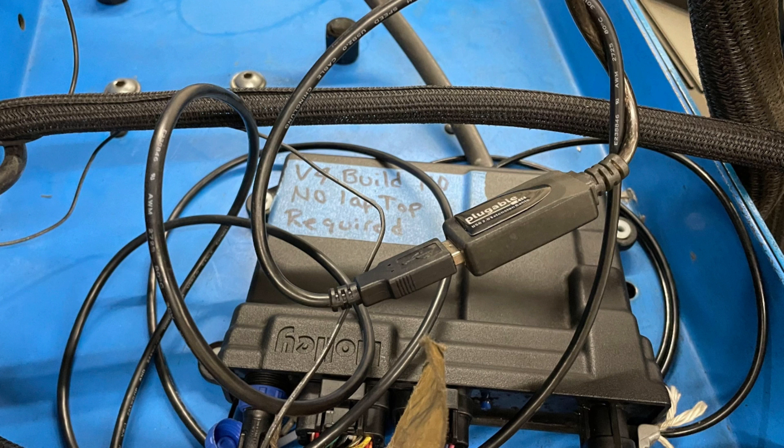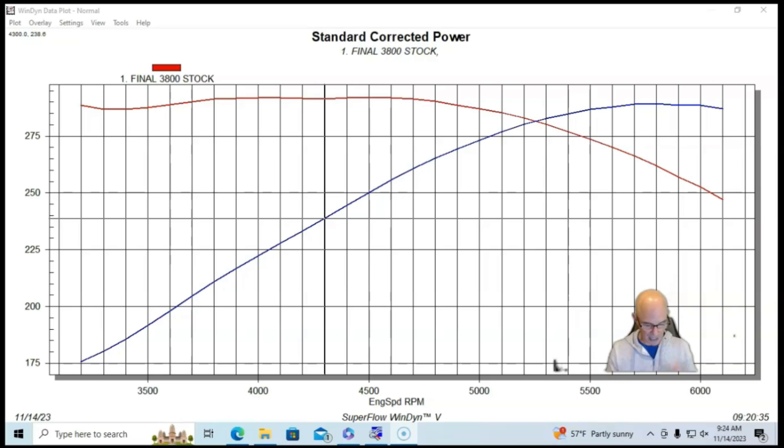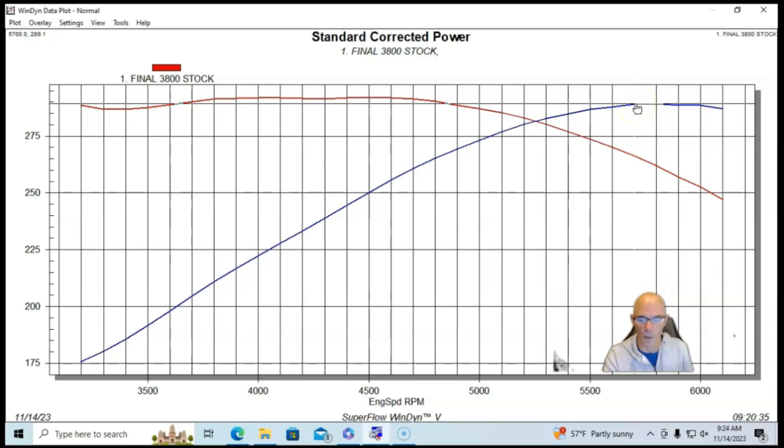We ran this on 91 octane because this is a low boost stock application designed to run on that. Running in this manner, our combination produced—the 3800 with the stock blower and stock pulley—produced 290 horsepower and 292 foot-pounds of torque.